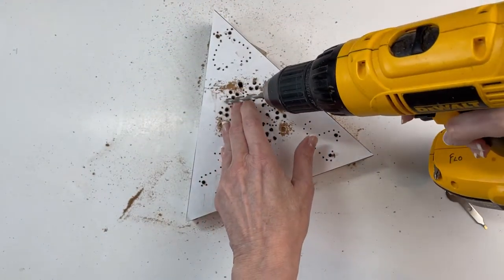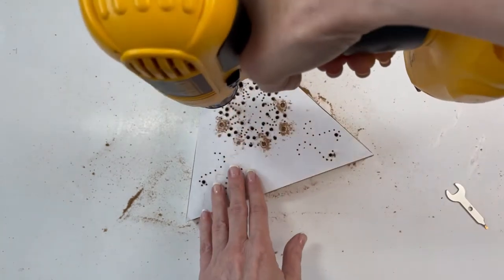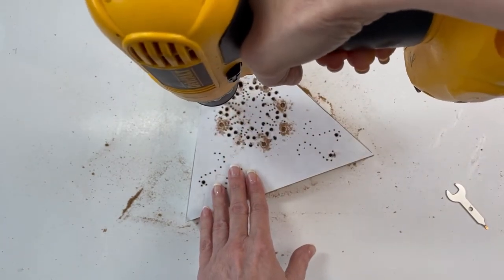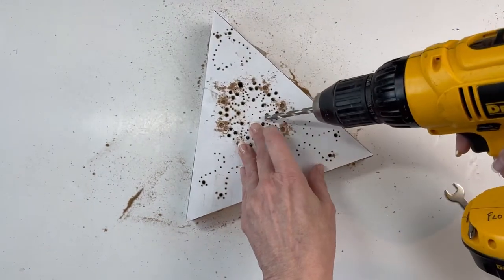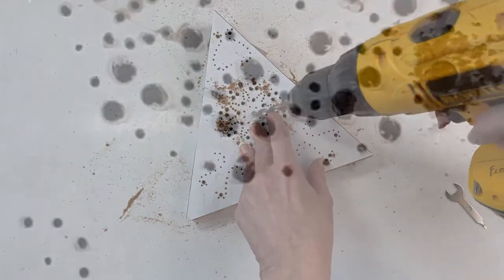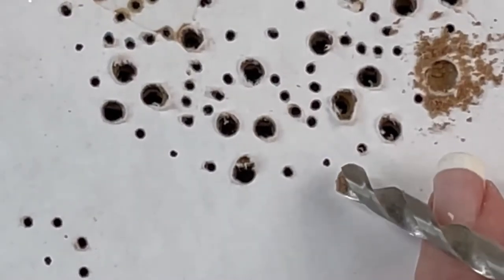Place the pointiest part of the bit directly on the dot and drill at a 90-degree angle. Here's a closer look at that.